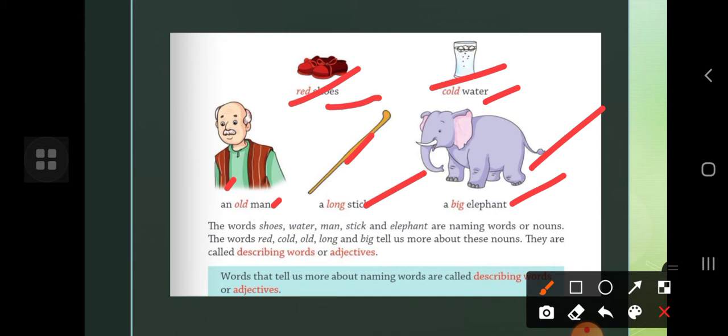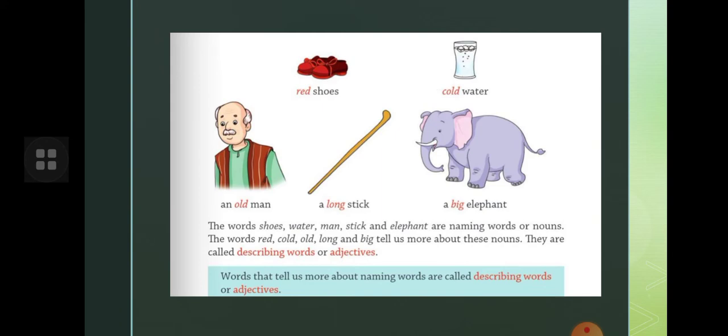So children, these are the words that tell us about these nouns. They are called describing words or adjectives. So children, what is the proper definition? Words that tell us more about naming words are called describing words or adjectives.